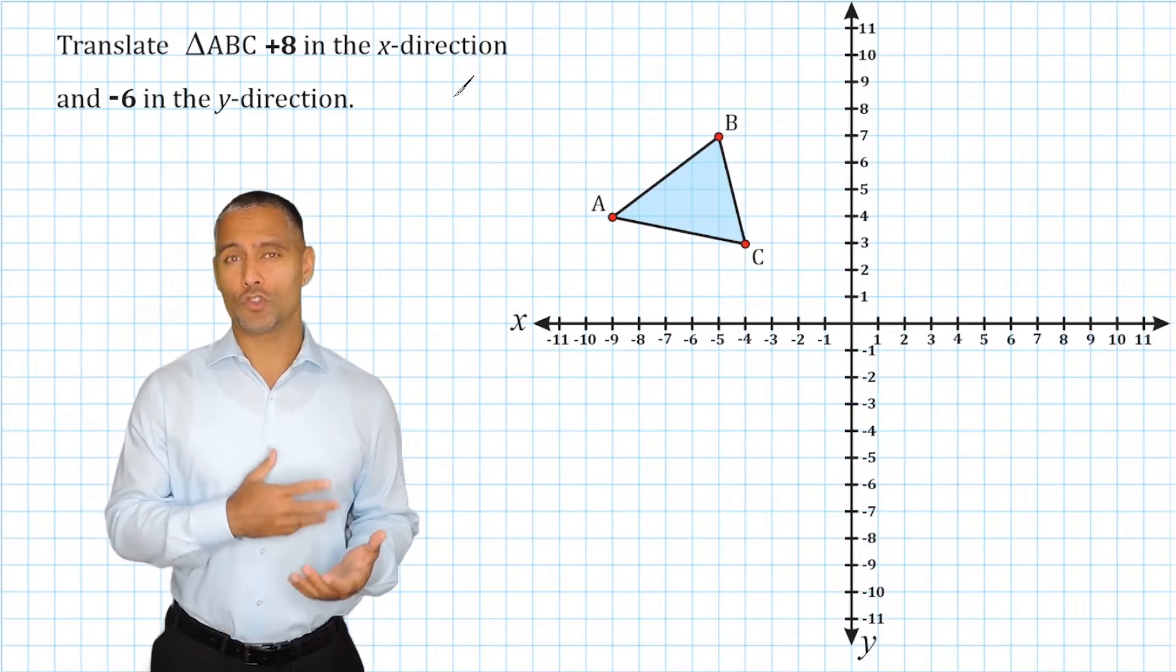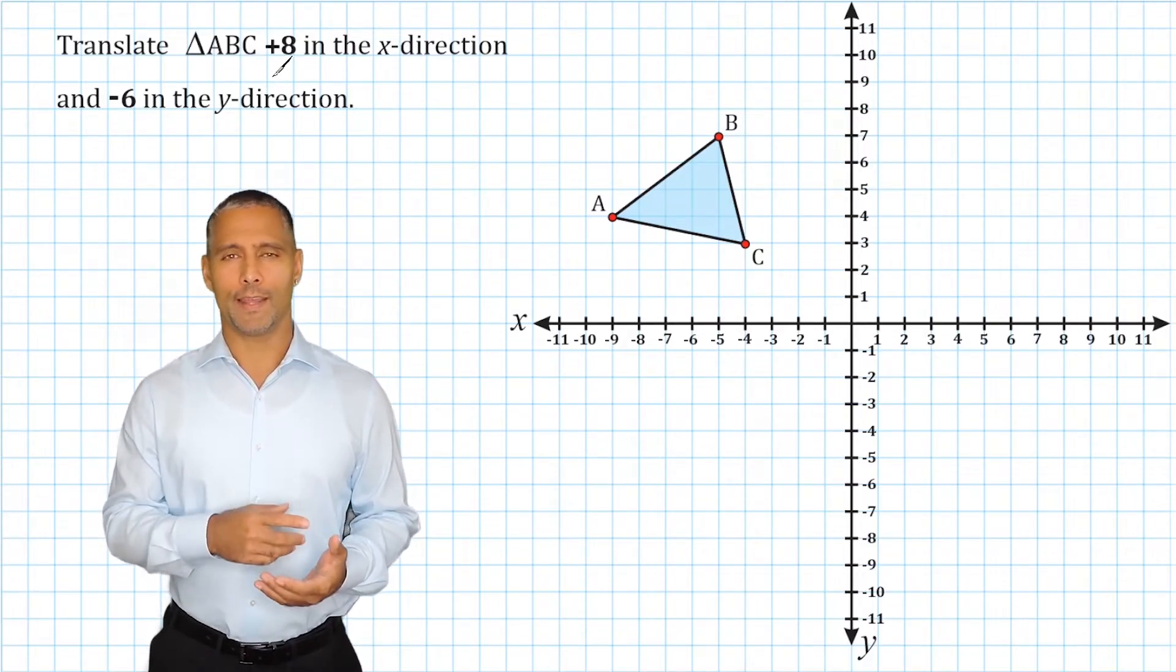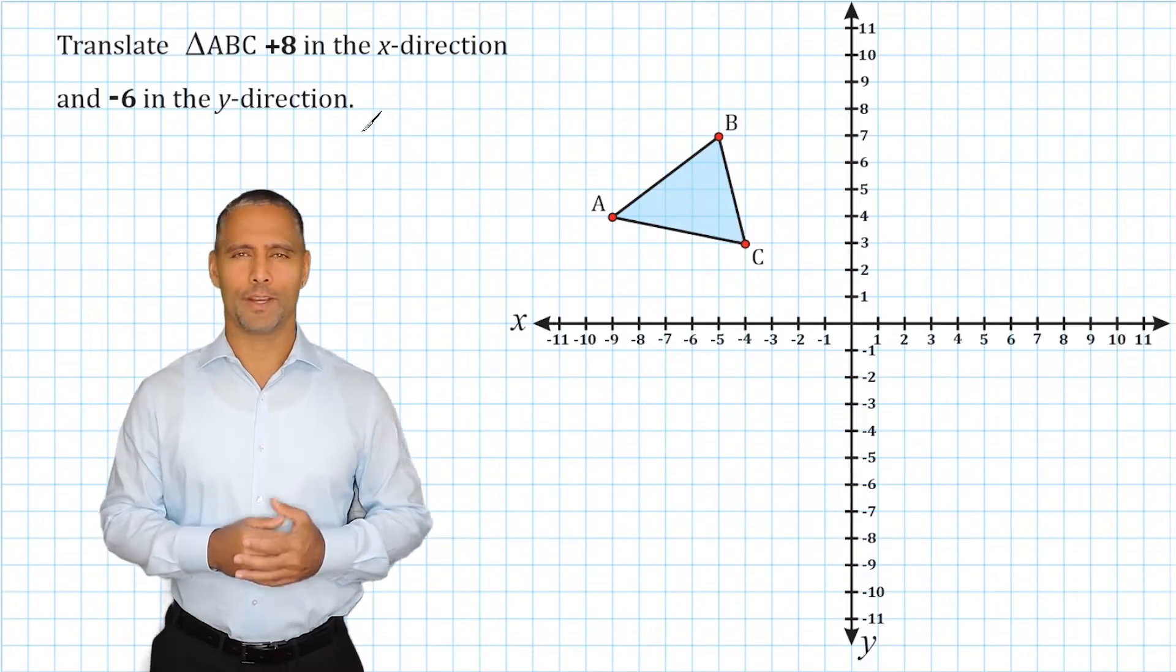This problem is asking us to translate triangle ABC positive 8 in the x-direction and negative 6 in the y-direction.